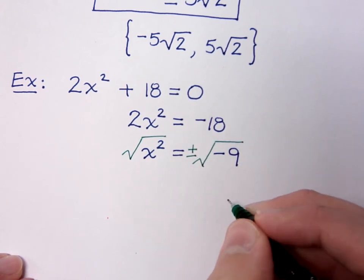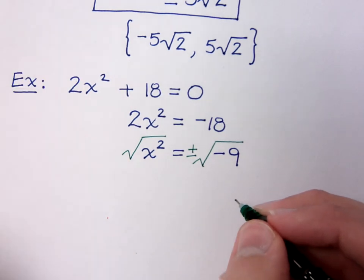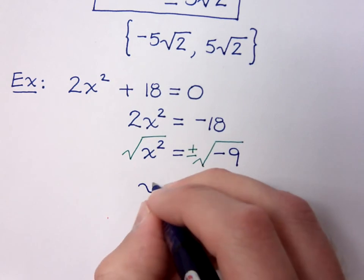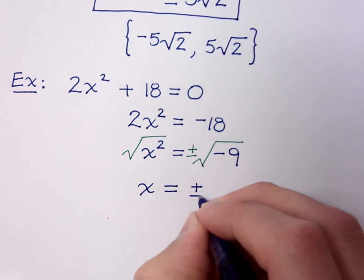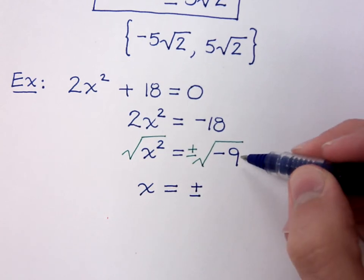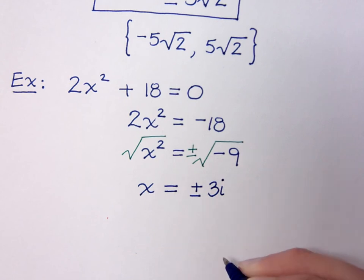We need the plus or minus so we get our two solutions here. So on the left side we have x, and on the right side we have plus or minus. We just went over this. The square root of 9 is going to give you 3. But since you've got the negative, that's going to make this 3i. So x equals plus or minus 3i.